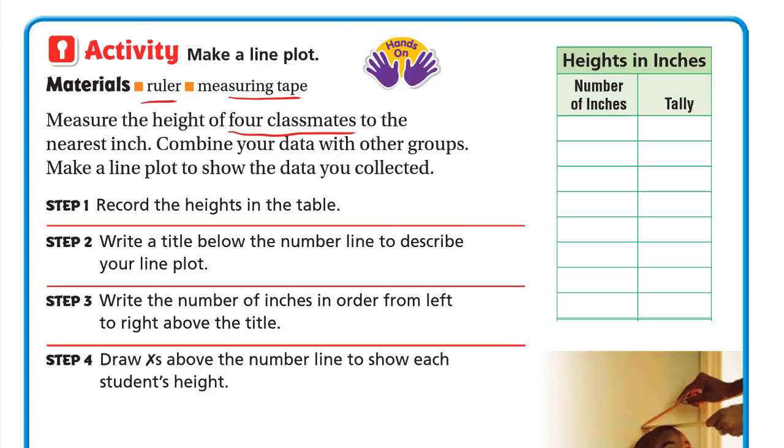Step number one: Record the heights in the table. Suppose that the heights are from 50 to 57 inches. These numbers will be different from your numbers as the heights in your class may be different from these. Let's say one student is 50 inches tall, three students are 51 inches tall, and five students are 52 inches tall.